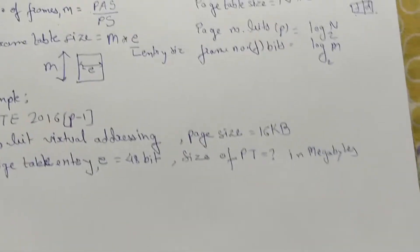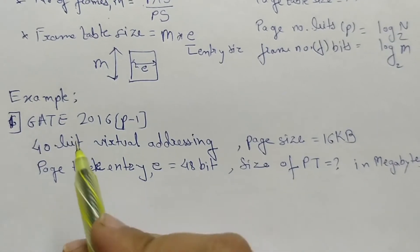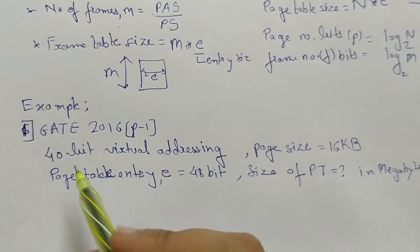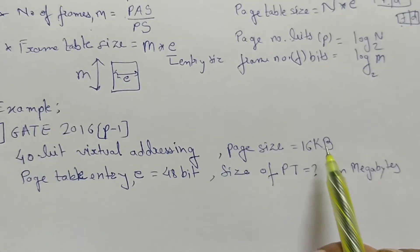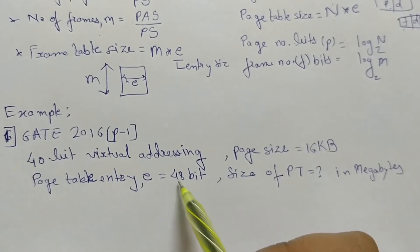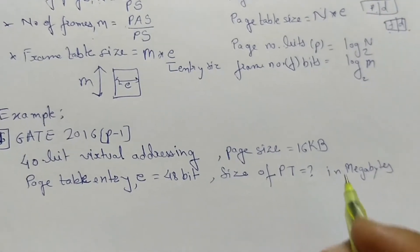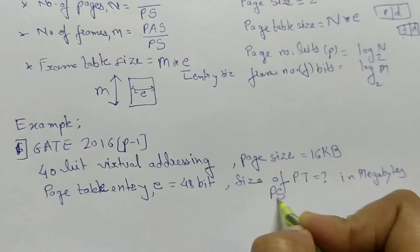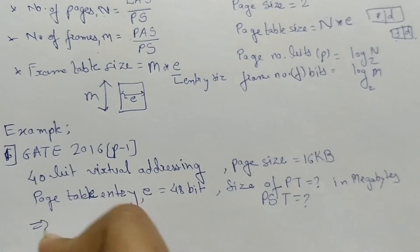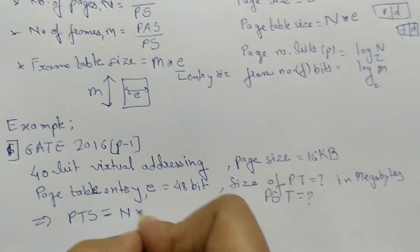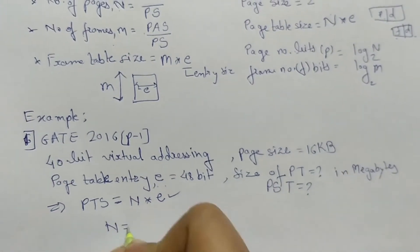Now let us see some examples asked in GATE examinations based on the paging system. The first question is from GATE 2016 Paper 1. There is a 40-bit virtual address space — this is the logical address space. Page size is 16 KB. Page table entry size, small e, is equal to 48 bits. They ask what will be the size of the page table in megabytes. What we have to find is page table size. We need the formula: page table size equals capital N into E, where small e is already given.